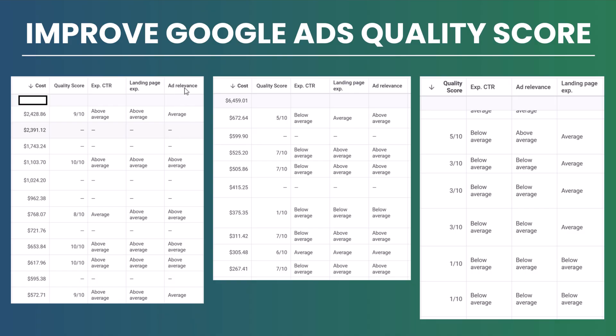If you're seeing average ad relevance scores, create another advertisement and adjust low-performing headlines and descriptions. For average landing page experience, visit your landing page yourself on mobile and desktop. If you see major issues, update them — or launch a landing page variation. For expected click-through rate, look at CTR at the keyword, campaign, and ad group level to identify anything dragging it down.